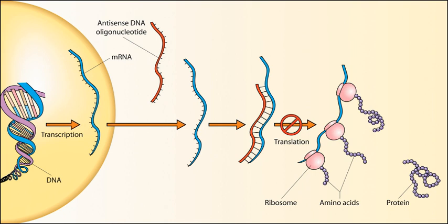The only real biological information important for labeling strands is the location of the 5' phosphate group and the 3' hydroxyl group, because these ends determine the direction of transcription and translation. A sequence written 5'-CGCTAT-3' is equivalent to a sequence written 3'-TATCGC-5', as long as the 5' and 3' ends are noted. If the ends are not labeled, convention is to assume the sequence is written from left to right in the 5' to 3' direction.